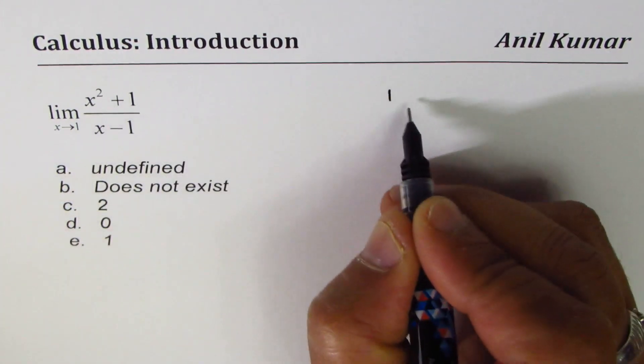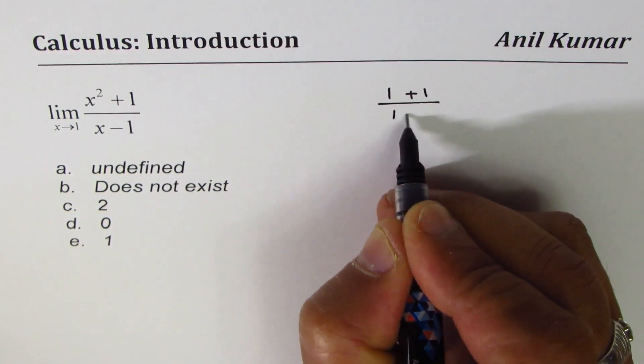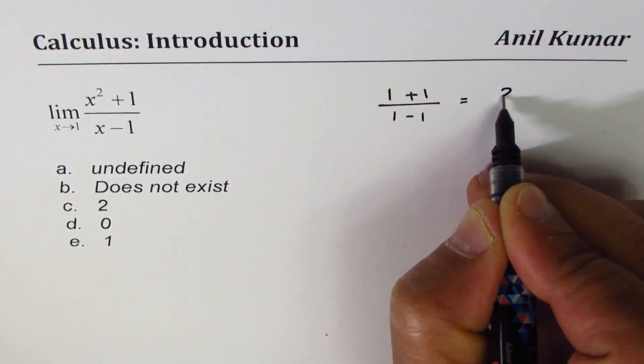I get 1, 1 squared is 1, plus 1 over 1 minus 1. So what I get is 2 over 0.